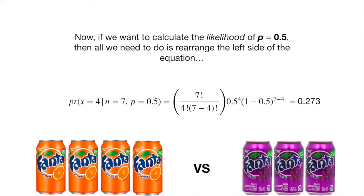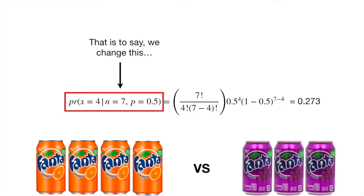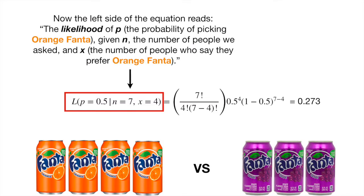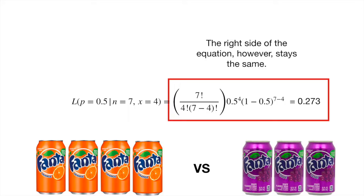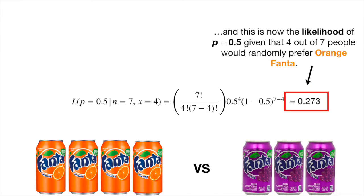Now, if we want to calculate the likelihood of p equals 0.5, then all we need to do is rearrange the left side of the equation. The left side now reads: the likelihood of p, the probability of picking Orange Fanta, given n, the number of people we asked, and x, the number of people who say they prefer Orange Fanta. The right side of the equation stays the same, and this is now the likelihood of p equals 0.5, given that 4 out of 7 people would randomly prefer Orange Fanta.